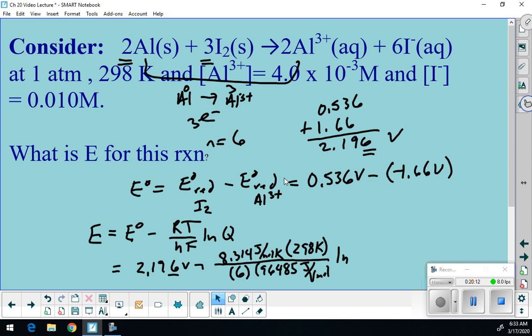So I have 6 again. Wow, that's a coincidence, isn't it? My F is 96485 joules per volt mole. And then what's my Q? My Q is going to be concentration of my aluminum squared, concentration of my iodide to the 6th over the concentration of 1. That's it. So I don't have anything in the denominator here.